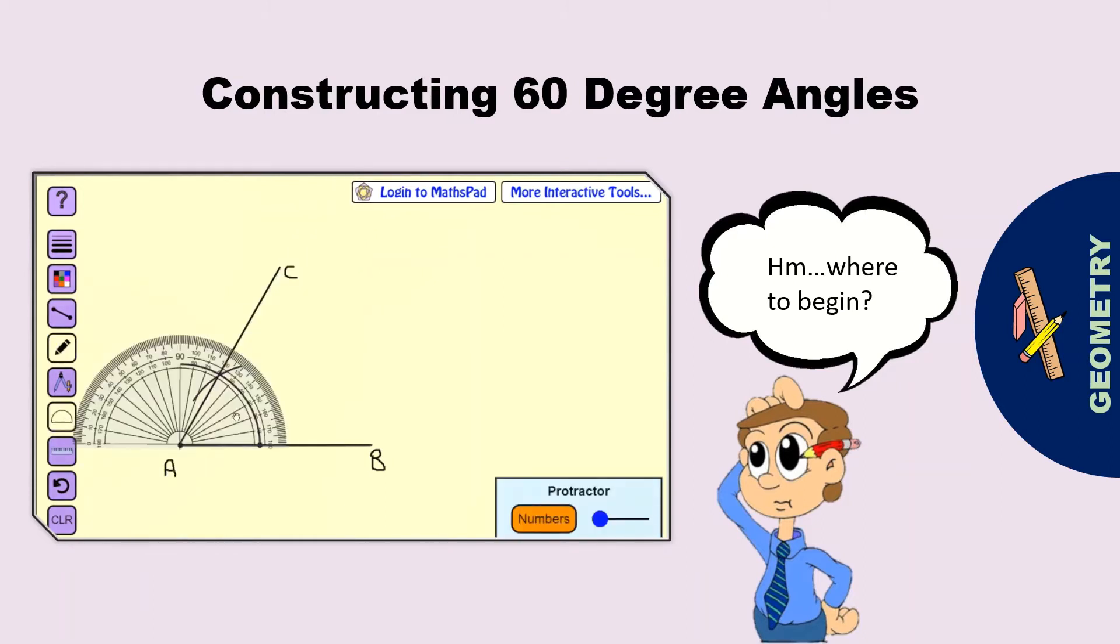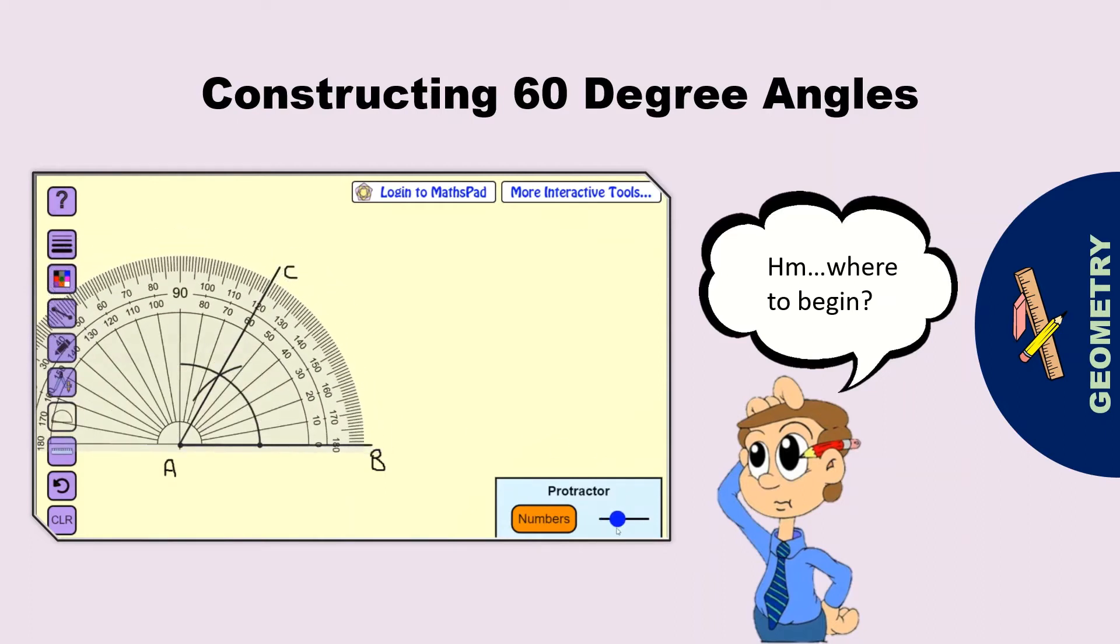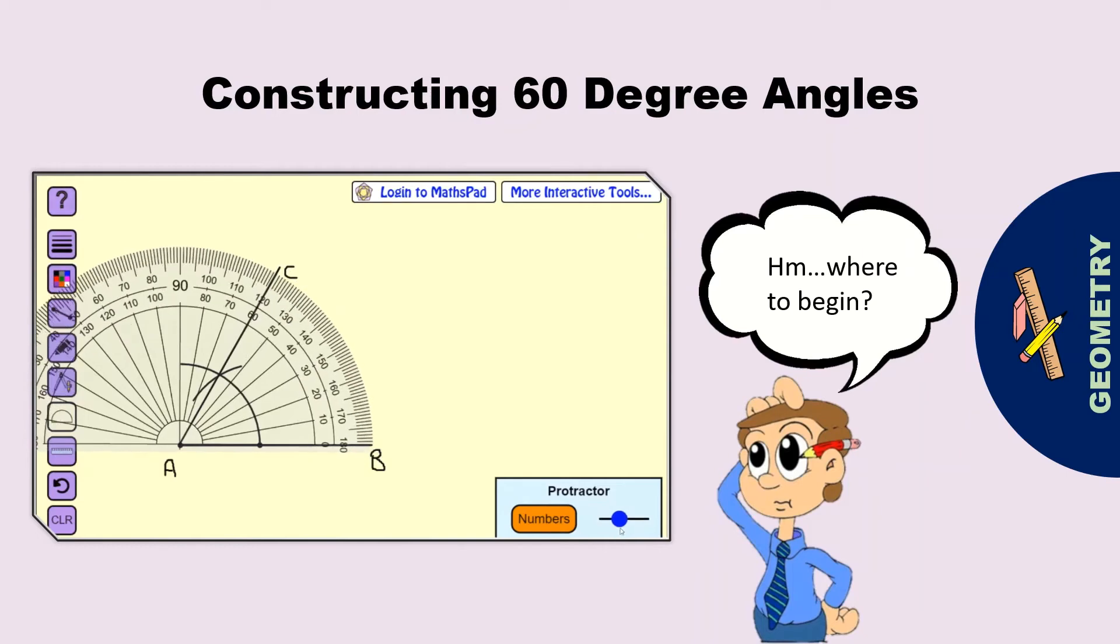Then we take our protractor and we're able to measure the angle that we just constructed. The angle at A is equal to 60 degrees.